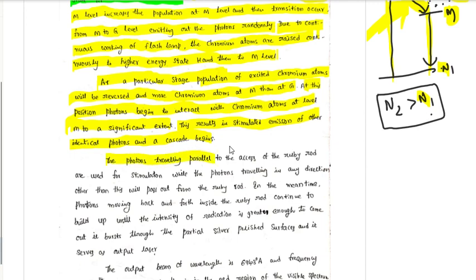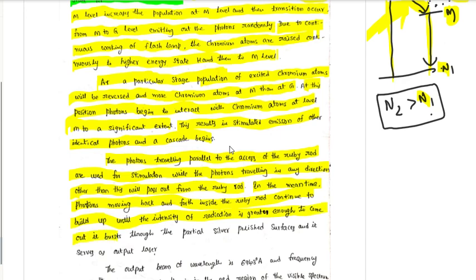The photons traveling parallel to the axis of the ruby rod are used for stimulation, while the photons traveling in any other direction pass out from the ruby rod. Photons moving back and forth inside the ruby rod continue to build up until the intensity of radiation is great enough to burst through the partial silver polished surface as an output laser beam.